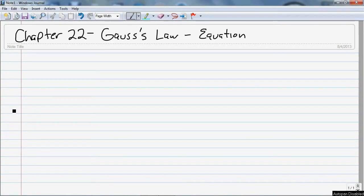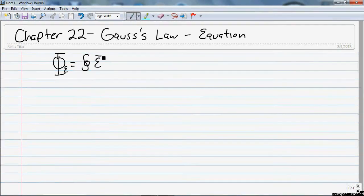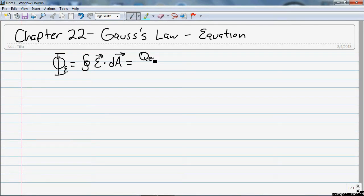We can look at the discussion we had in the overview of Gauss's Law. And if you remember from the overview, Gauss's Law says that the flux, phi, is equal to the surface integral of the electric field vector with the dot product of the differential area vector.